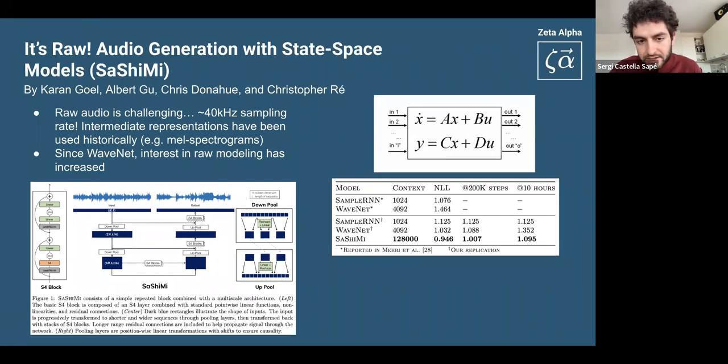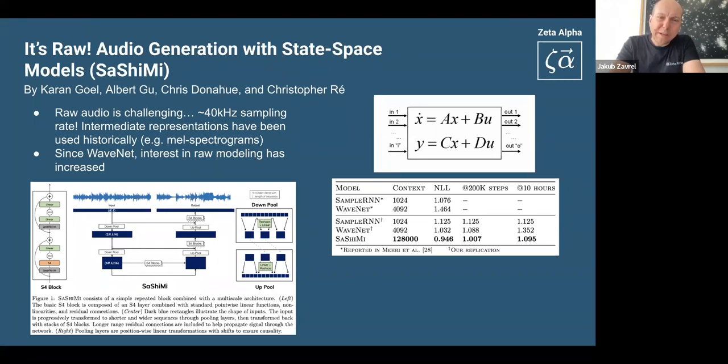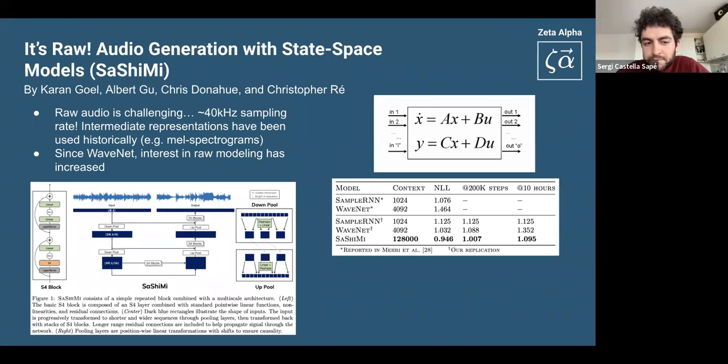So what they propose here is to use this state space representation, which is something that is used in control theory a lot. And they basically build this model that uses this representation. And what I think that the most interesting bit to look into this slide is this context size that they show here that it's 128,000 samples. That is a pretty large context. And in audio, that's important. And pretty much they showed that they have state of the art generation of audio judged by humans. And yeah, it's definitely an approach that might be useful for this kind of very long range dependencies, maybe even in connection with the perceiver stuff that we have talked about.